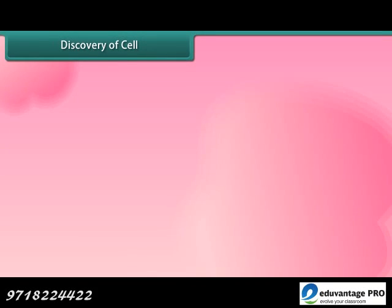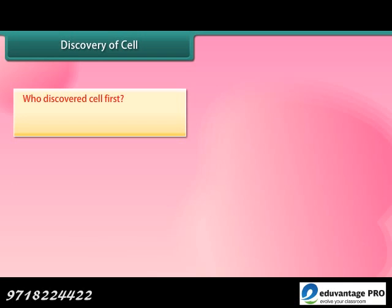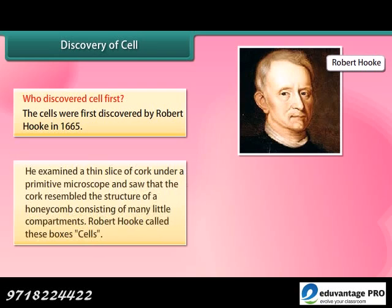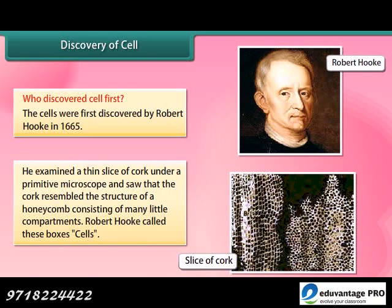Discovery of cell: The cells were first discovered by Robert Hooke in 1665. He examined a thin slice of cork under a primitive microscope and saw that the cork resembled the structure of a honeycomb consisting of many little compartments. Robert Hooke called these boxes cells.